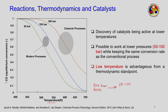In modern processes, pressure came down to 50–100 bar and temperature to around 500 K due to the invention of newer catalysts. This process disruption — from 300 bar and 600 K — was achieved by discovering catalysts active at lower temperatures, making it possible to work at lower pressure while keeping the same conversion rate.